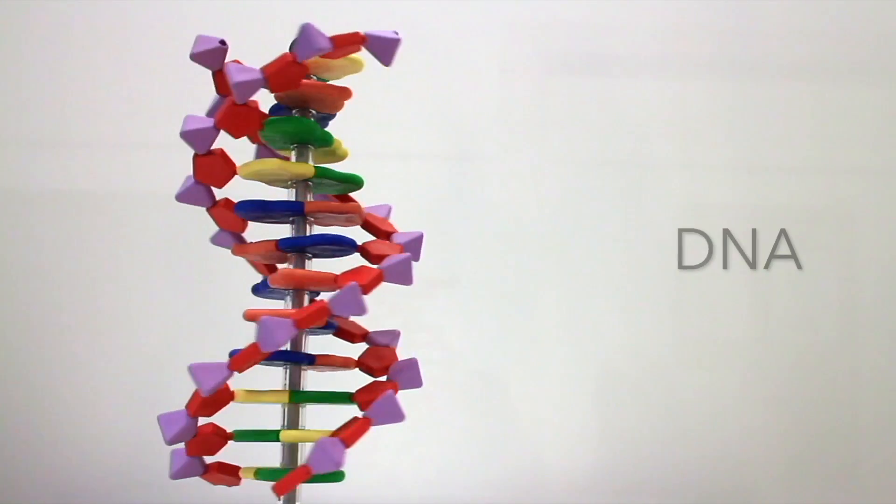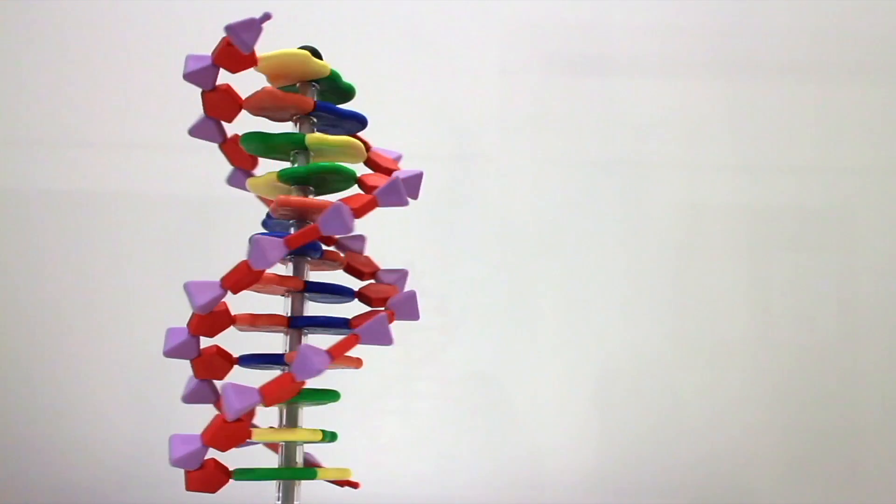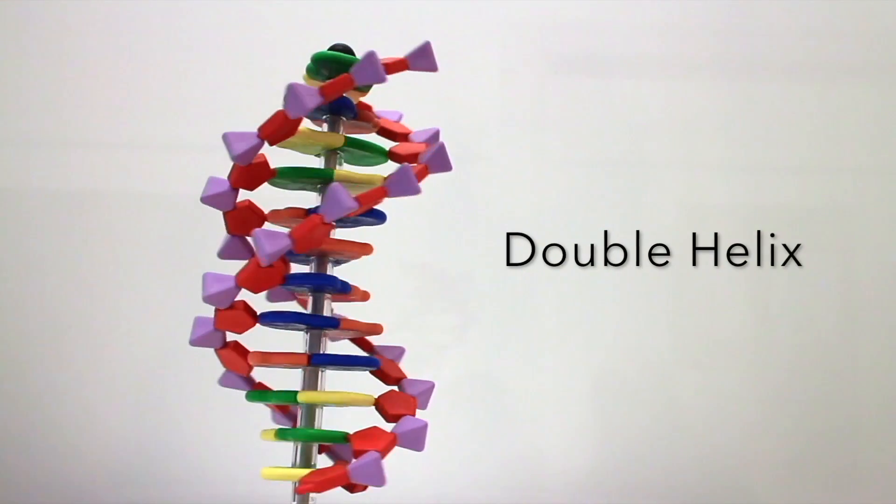Every cell in your body contains DNA, which is a complicated molecular structure containing all of your genetic information. The structure is known as a double helix, which is like a twisted ladder.